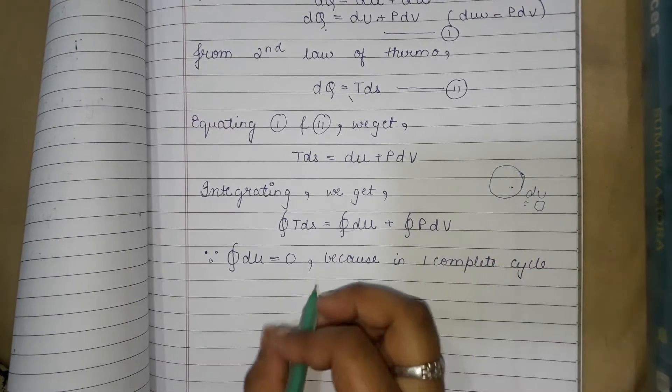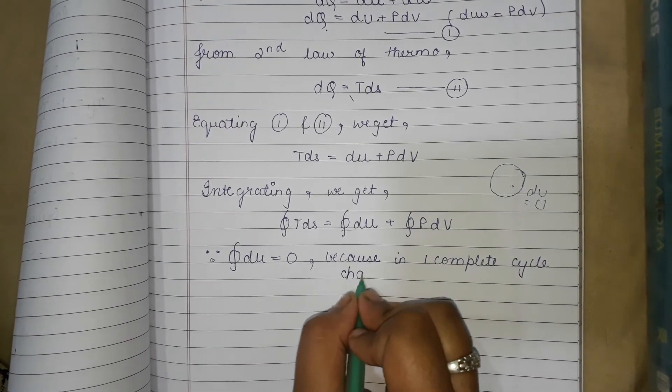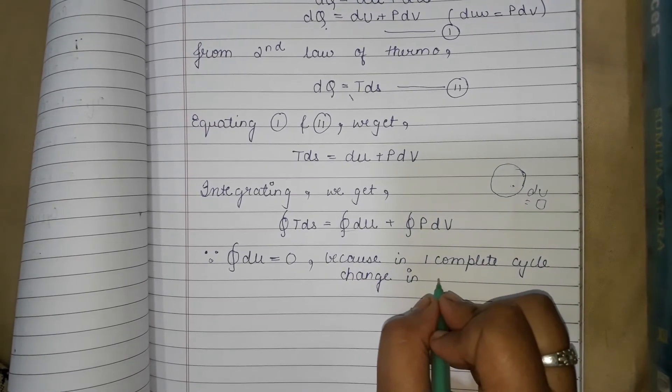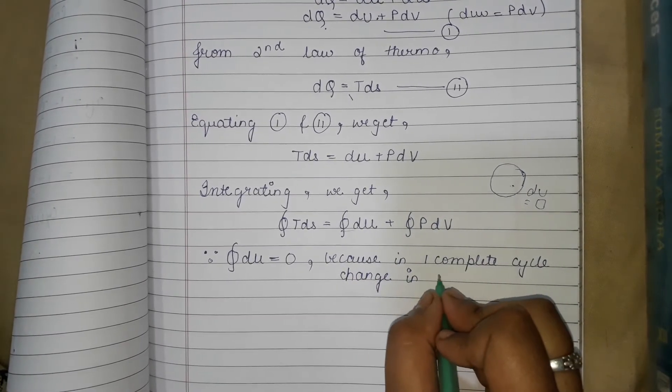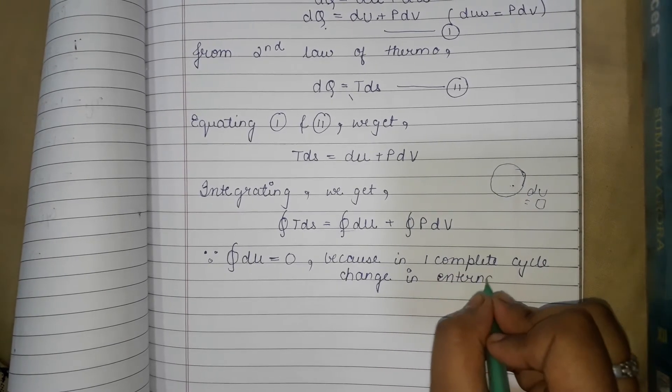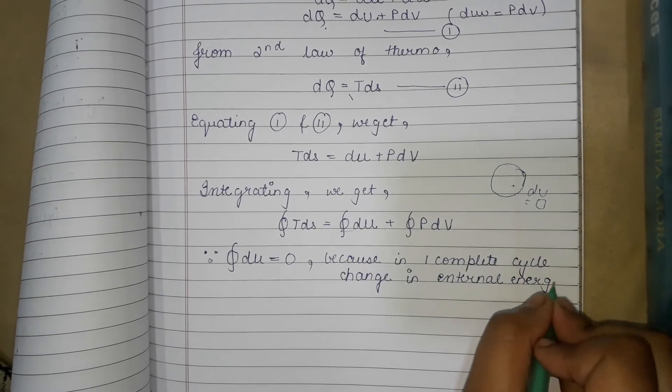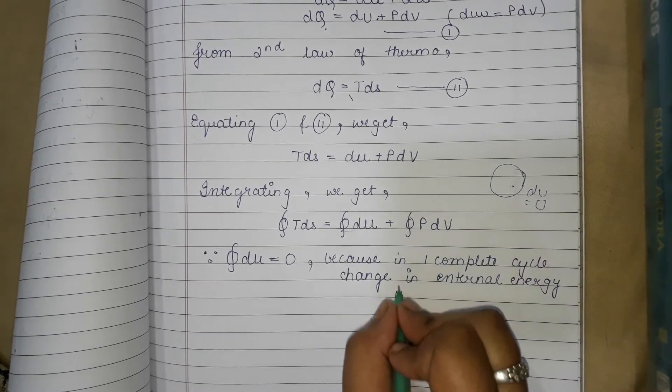Because in one complete cycle, change in internal energy, that is du, is zero.